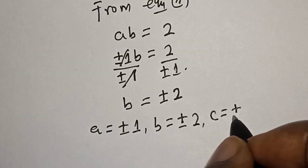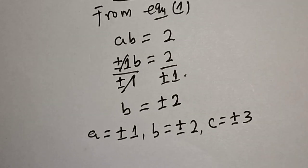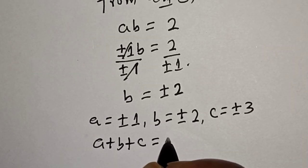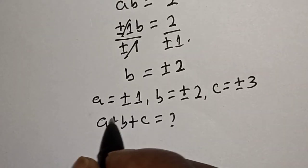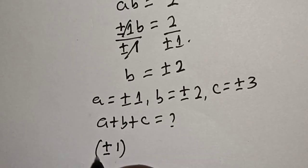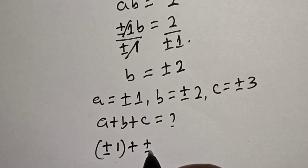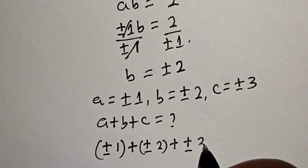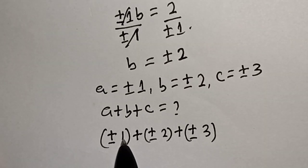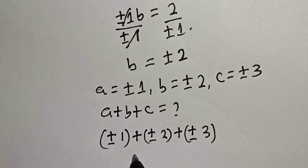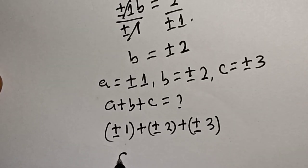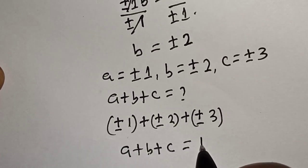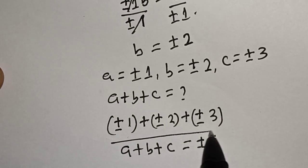So A is equal to plus or minus 1, B is equal to plus or minus 2, and C is equal to plus or minus 3. The question asks us to find A plus B plus C. That is plus or minus 1 plus plus or minus 2 plus plus or minus 3. Adding them together: 1 plus 2 is 3, plus 3 is 6. Therefore A plus B plus C is equal to plus or minus 6, and that is our final answer.